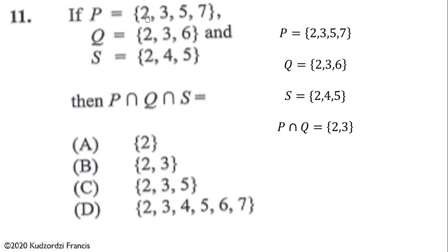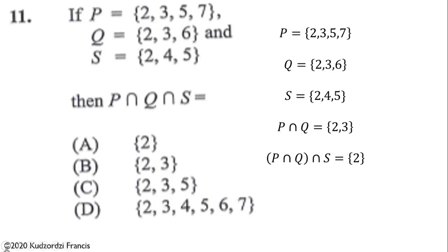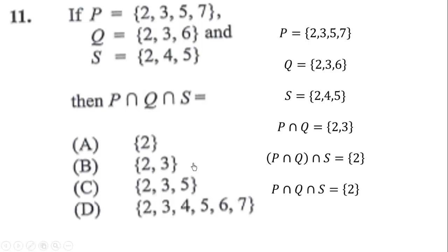You can see that it is only 2 that is common to all of them. P intersection Q is {2, 3}. Then P intersection Q intersection S is {2}. So the element common to P and Q is {2, 3}, and the element common to S and P intersection Q is {2}. The correct answer is A for Question 11.